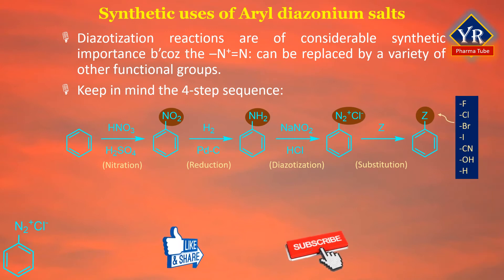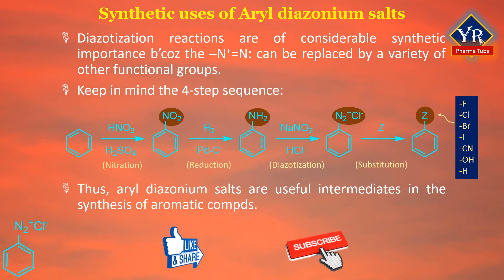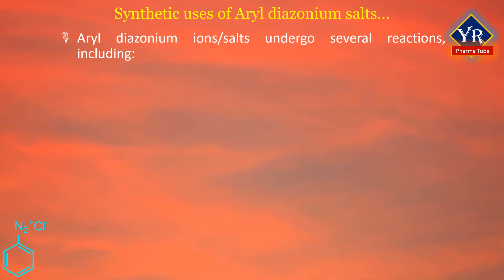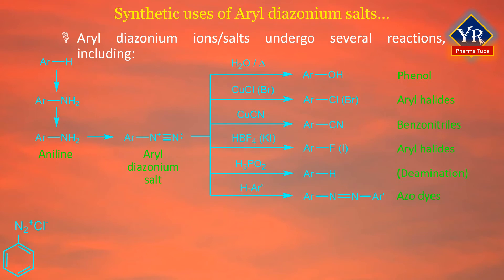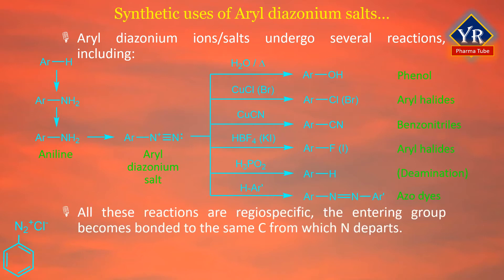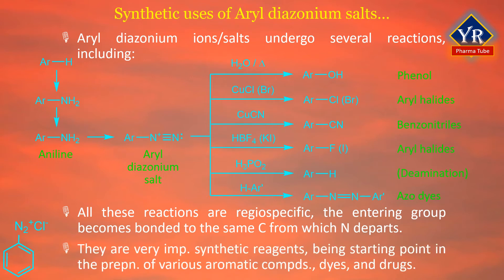In the fourth step, the benzene diazonium salt is substituted with any atom or group to produce a benzene derivative. The diazonium group of aryl diazonium salt can be replaced by fluorine, chlorine, bromine, iodine, nitrile, hydroxide, or hydrogen. Thus, aryl diazonium salts are useful intermediates in aromatic synthesis. Molecular nitrogen acts as a leaving group and is replaced by another atom or group. All these reactions are regiospecific — the entering group bonds to the same carbon from which nitrogen departs.